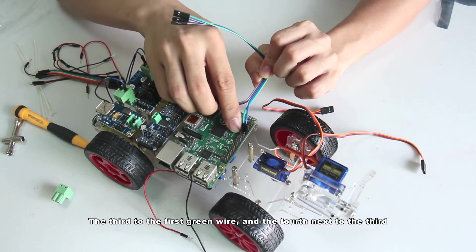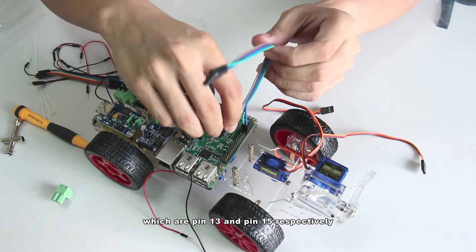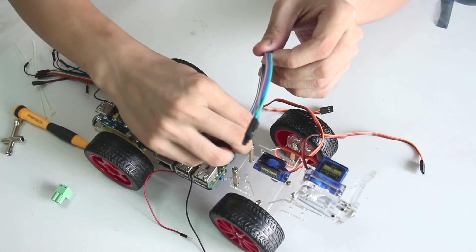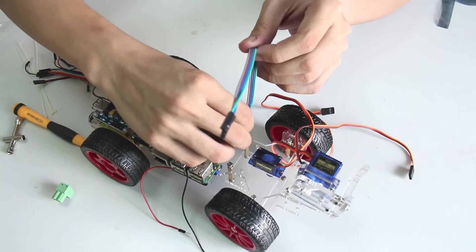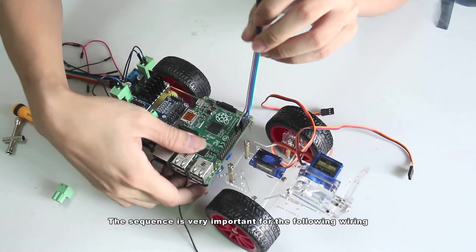The third to the first green wire and the fourth next to the 3rd pin, which are pin 13 and pin 15 respectively. The sequence is very important for the following wiring.